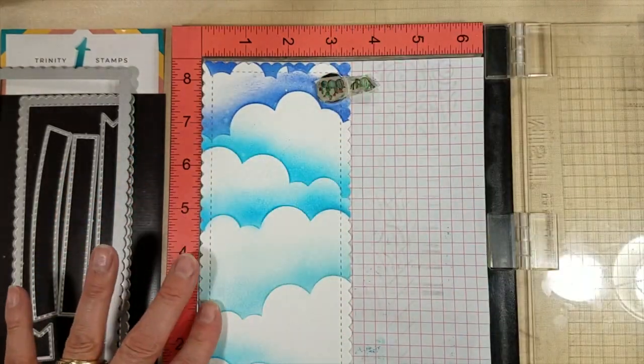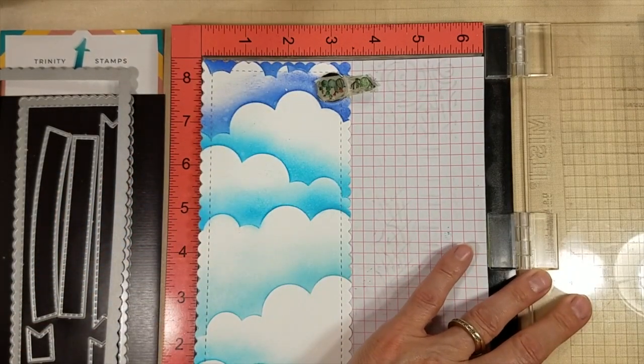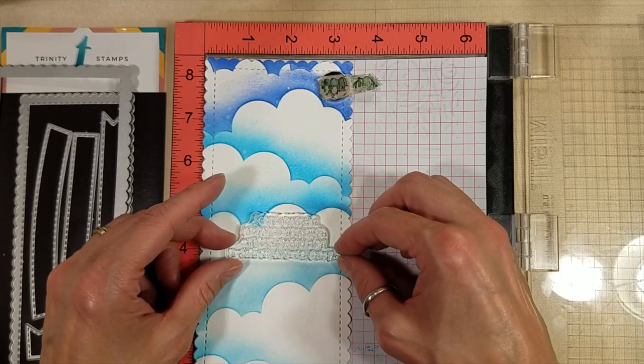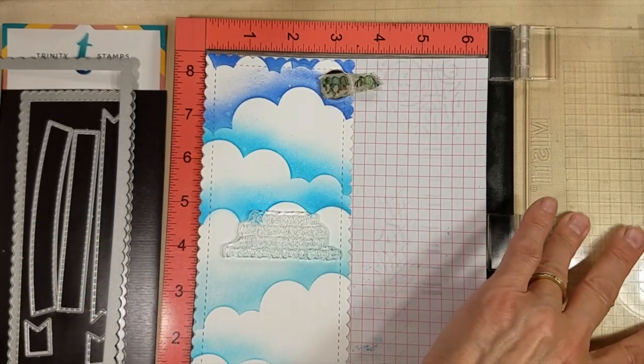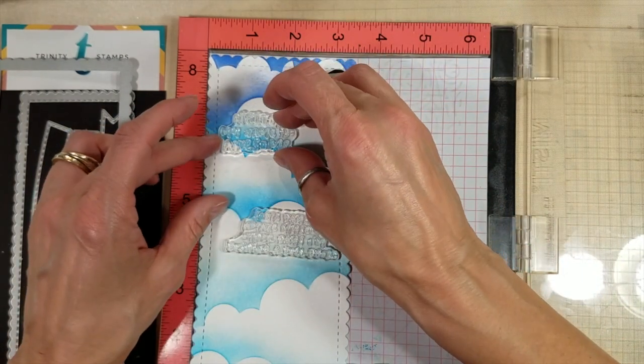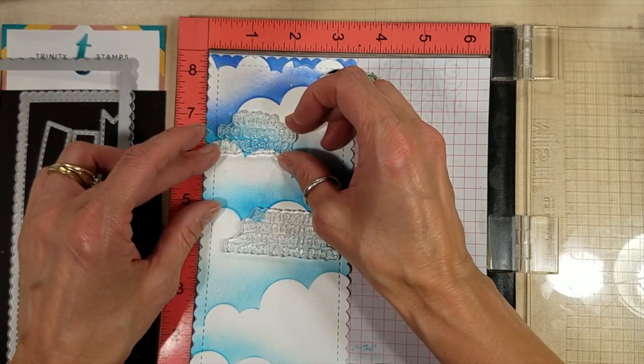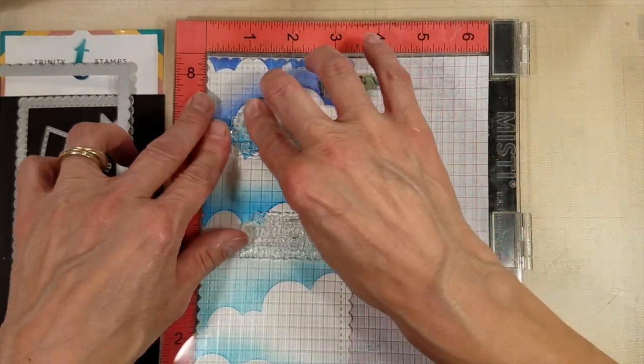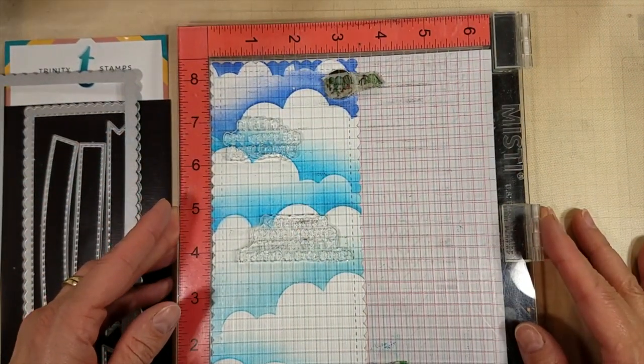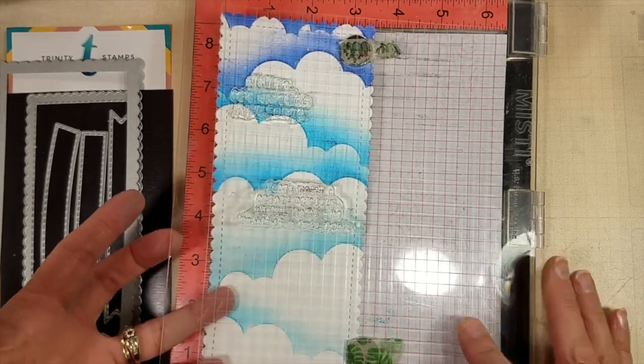We're going to take Trinity Stamps slimline scalloped frame and we're going to cut that out. And that was so I could get placement correctly. I had started to do it before I die cut it, but figured I better not get too footloose and fancy free here.